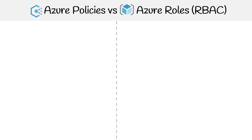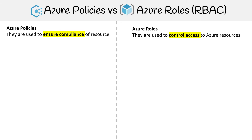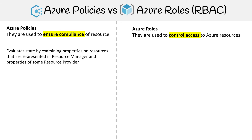Let's do a quick comparison between Azure Policies and Azure Roles, just to make sure we're very clear on the difference between these two things. Azure Policies are used to ensure compliance of resources, while Azure Roles are used to control access to Azure resources. On the policy side, these evaluate the state by examining properties on resources represented in Resource Manager, and properties of some resource providers.